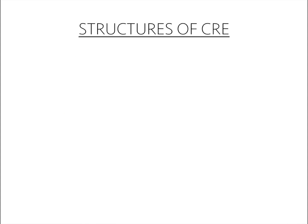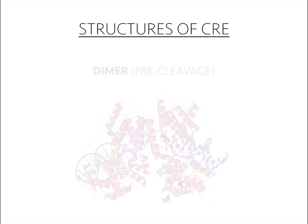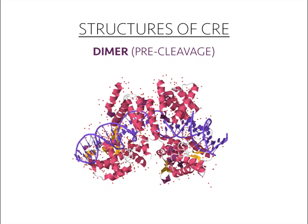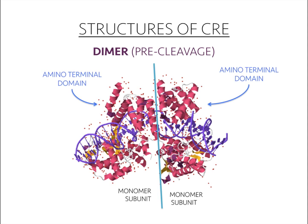On a single DNA strand, Cre would be in a dimer containing two monomeric subunits. There are two domains in each subunit. The domain displayed on top here is the amino terminal domain, containing five alpha helices. This domain interacts with the major groove of the DNA strand.